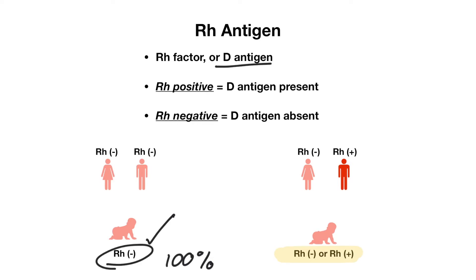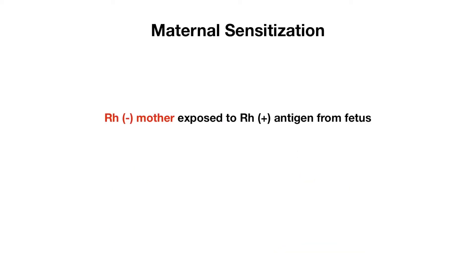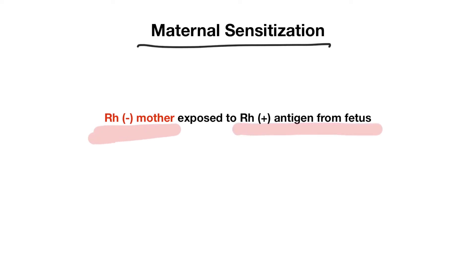This can be a problem because if mom is RH negative and she is pregnant with an RH positive child, then that antigen can be perceived as foreign, resulting in the production of antibodies leading to hemolytic anemia. This phenomenon is referred to as maternal sensitization, which means that mom, who is RH negative, is exposed to an RH positive antigen from her fetus, perceived as foreign by mom's immune system, resulting in the production of antibodies.